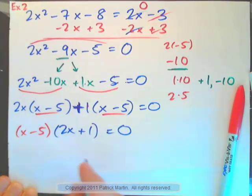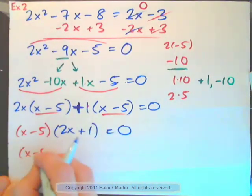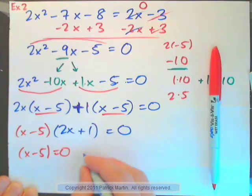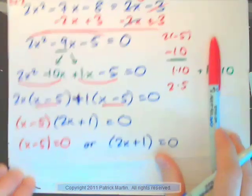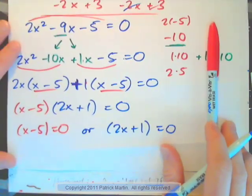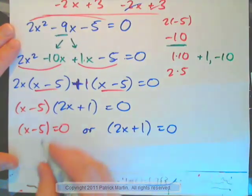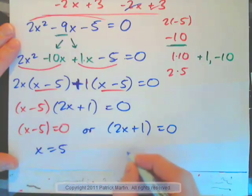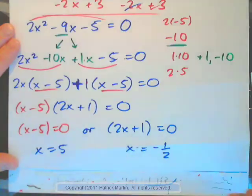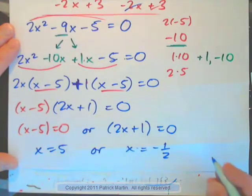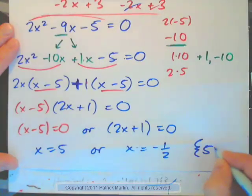So, this times this is 0. That means either the x minus 5 is 0. Or 2x plus 1 is 0. And solve both equations to get the answer. So, solve that. You get x is 5. Solve this. You'll find x is negative 1 half, right? You can solve that, can't you? x is 5 or negative 1 half. As a solution set, that would be 5, comma, negative 1 half.